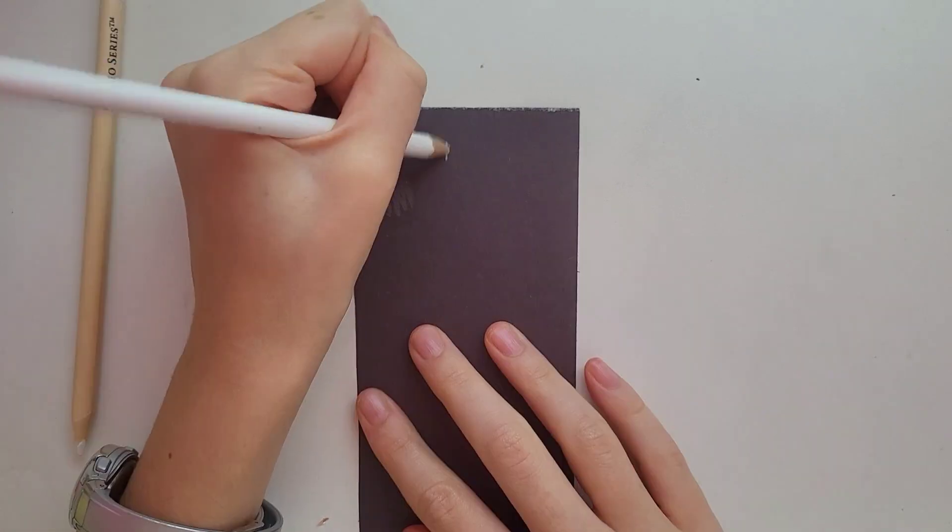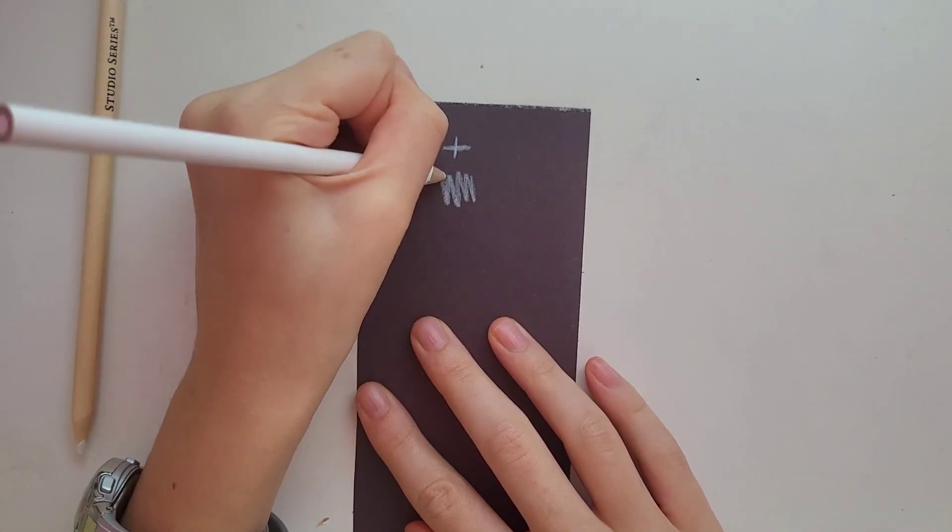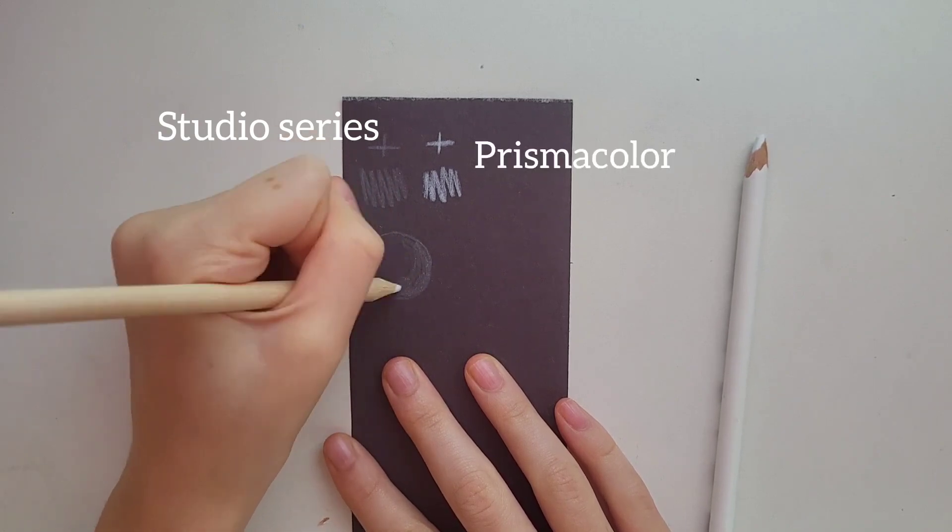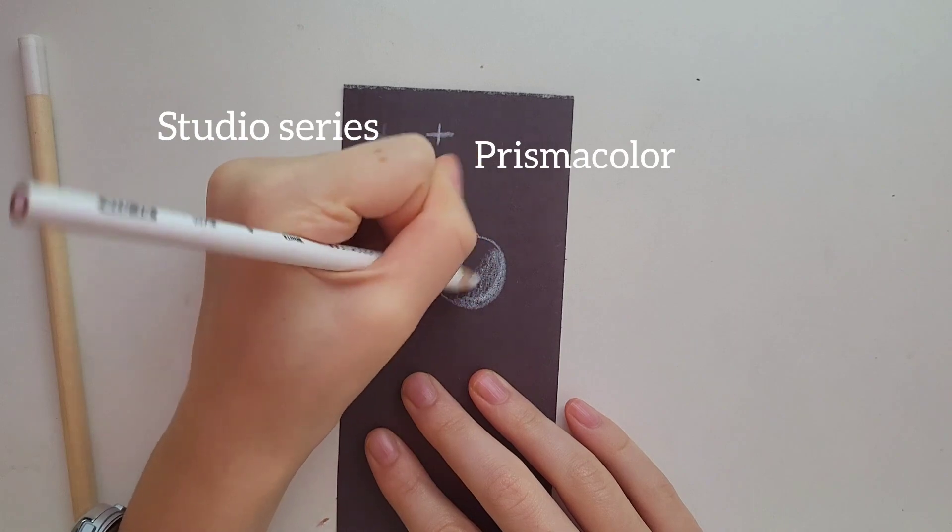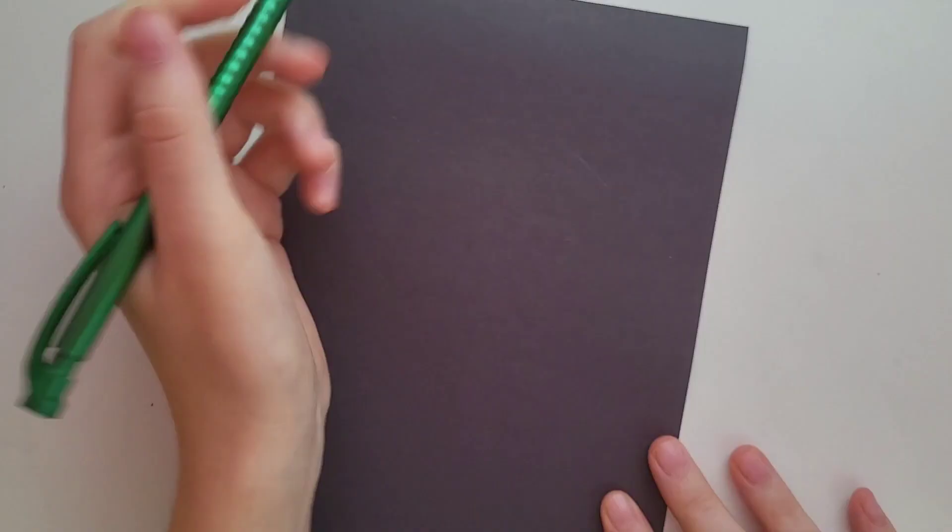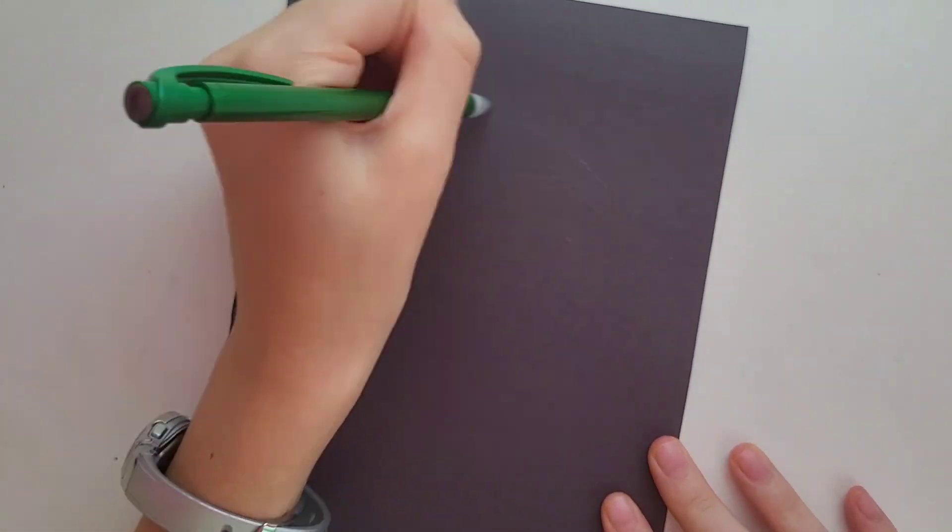I do have two white colored pencils, one is from a cheaper pack called Studio Series and then the second one is Prismacolor. I wanted to try them out before I started and obviously there is a very big difference. The Prismacolor is definitely a lot more vibrant, which I'm not really surprised by, but let me know which one to use more.